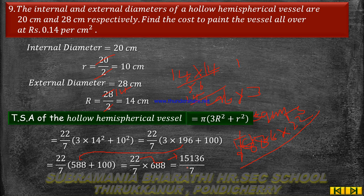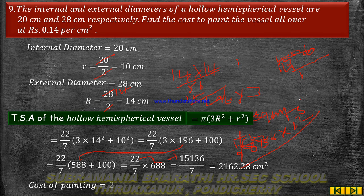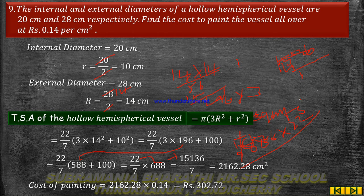Dividing 688 by 7: 15136 divided by 7 gives 2162.28 cm². Therefore the total surface area is 2162.28 cm². The cost of painting the hollow hemispherical vessel is equal to 2162.28 into 0.14, which gives a total cost of rupees 302.72 paise.